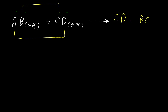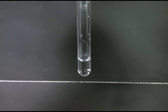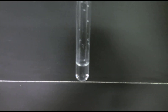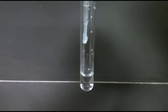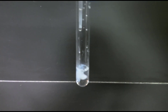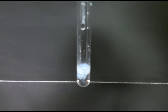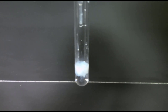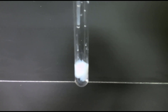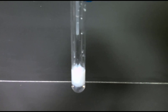Let's have some examples for this type of reaction. Here for the first example, you can see the silver nitrate solution in the test tube and I'm adding sodium chloride solution, and you can see a white solid is produced. So let's see how we can write the chemical equation for this reaction.